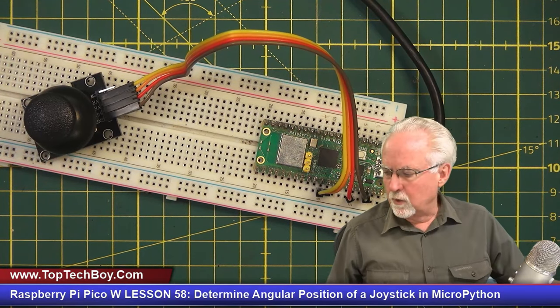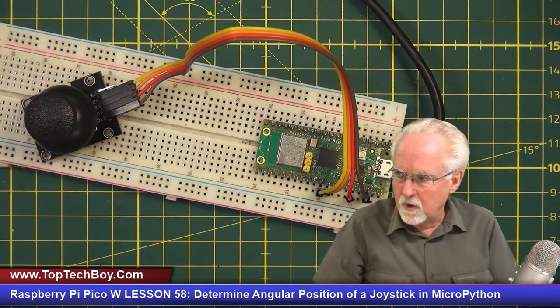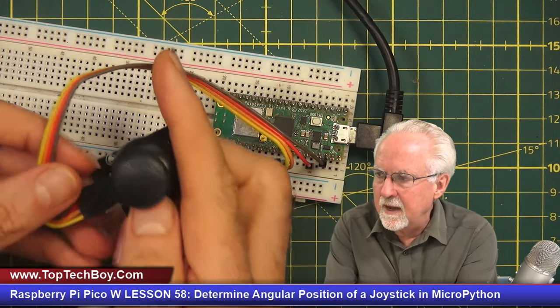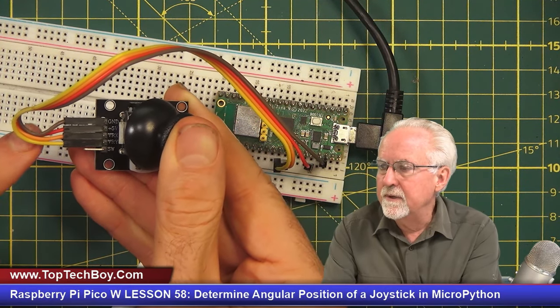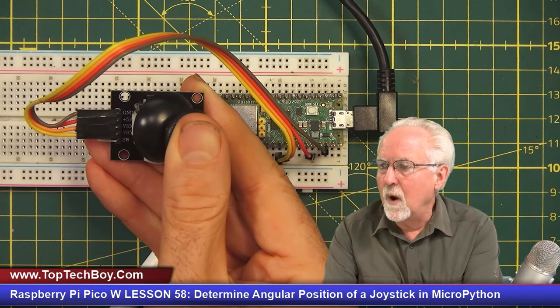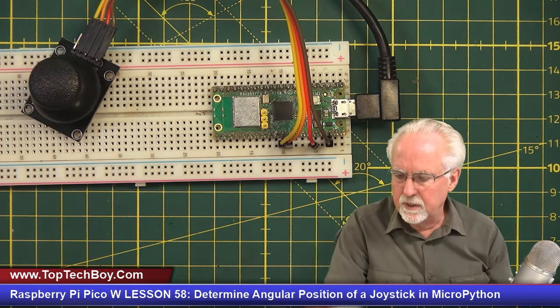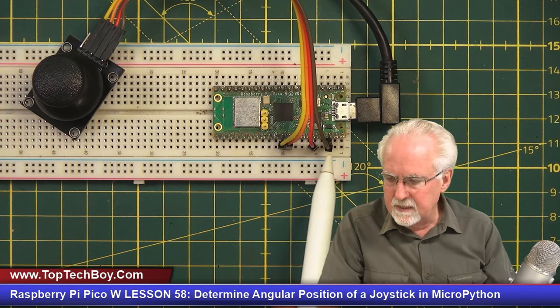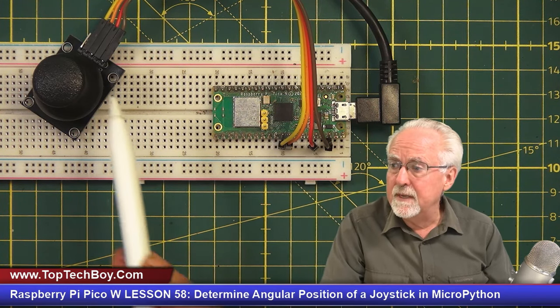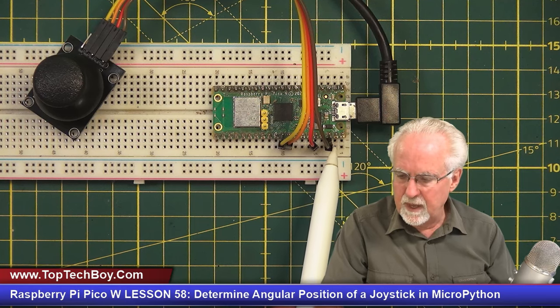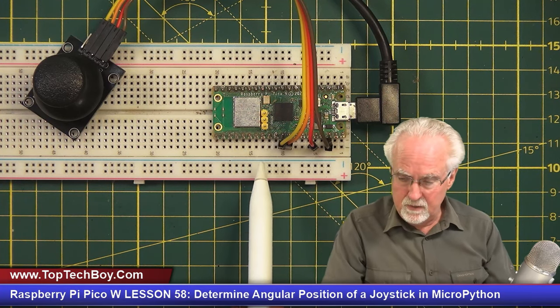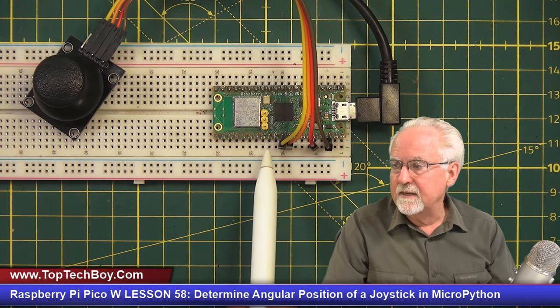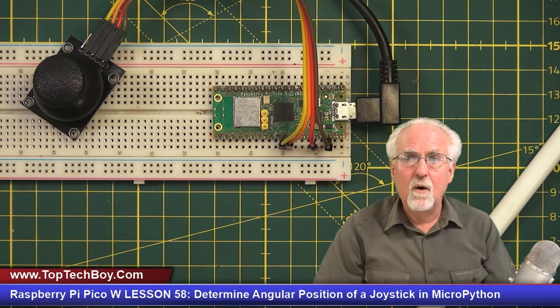I should give a quick recap of how we had this thing hooked up. If you look with the pins pointing to the left, you have ground, 5 volts, VRX, and VRY. We have the ground pin connected to physical pin 38. We have the pin labeled 5 volts hooked to 3.3 volts because we have a 3.3 volt A to D converter, that is physical pin 36. We have the VRX connected to GPIO pin 27 and the VRY pin connected to GPIO pin 26.